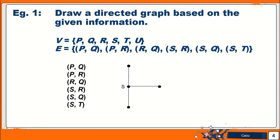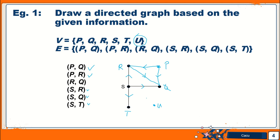S is going to R, S going into Q, and also T. I'm going to label those with arrows. Then we continue with edge PQ — we only have vertex Q here, so I add another vertex and label it P, then draw from P to Q with the arrow. Continue with P to R — we already have R, so just join it to P with an arrow. And then the last edge is R to Q, join it up with the arrow. Bear in mind we still have one vertex left — vertex U — which is an isolated vertex.